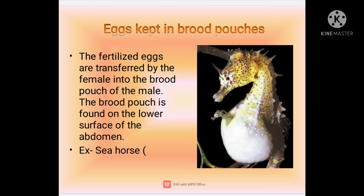The next method is eggs kept in a brood pouch. In this method the eggs after fertilization are transferred by the female into the brood pouch of the male. This brood pouch is usually present on the lower surface of the abdomen of the male. An example is the seahorse.